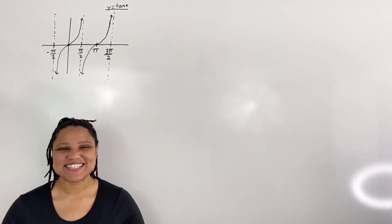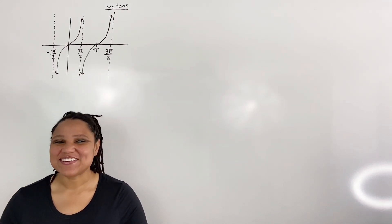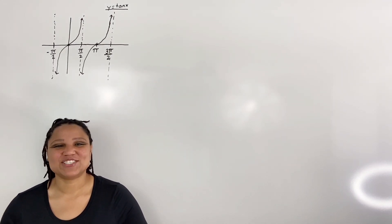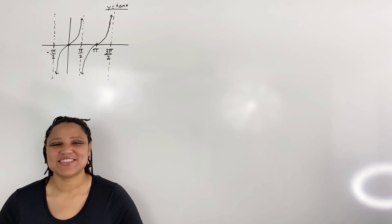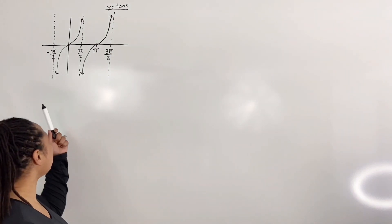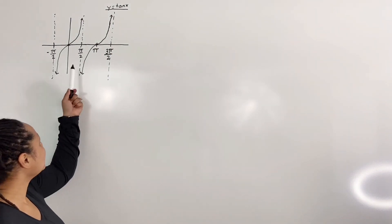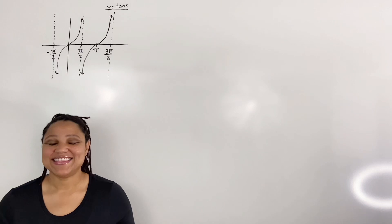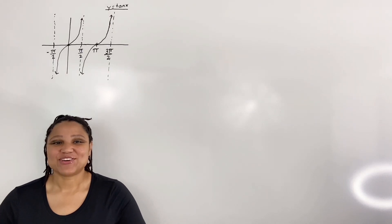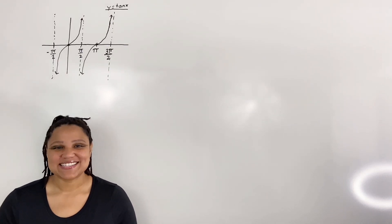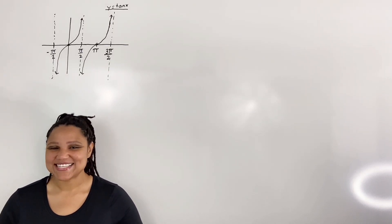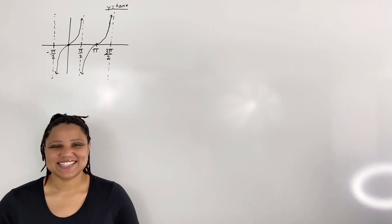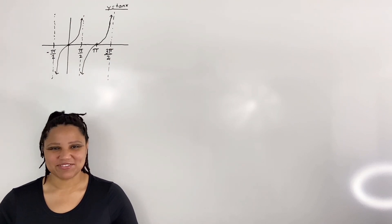But mathematicians are clever. Mathematicians decided to restrict the domain from negative pi over two to pi over two. In this way the graph passes the horizontal line test and thus tangent has an inverse.